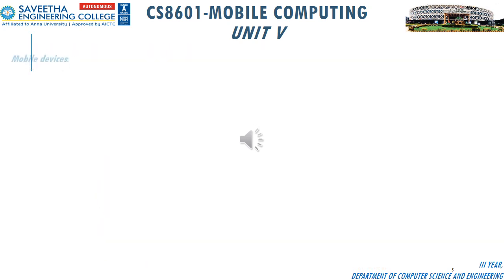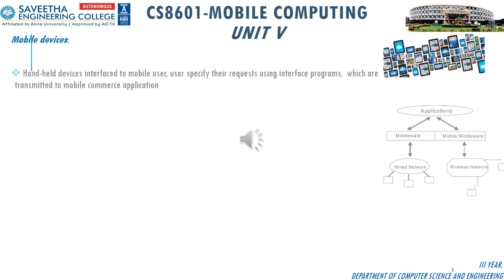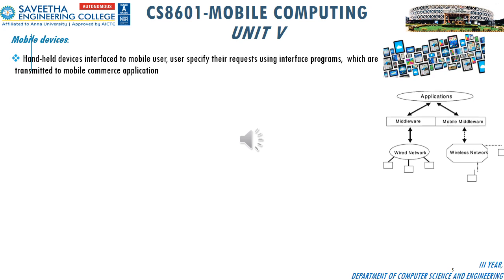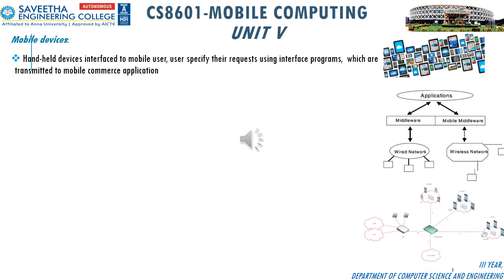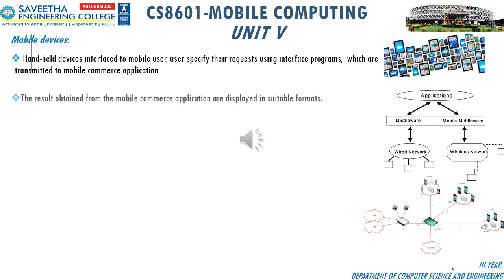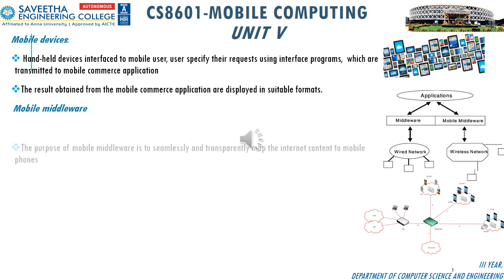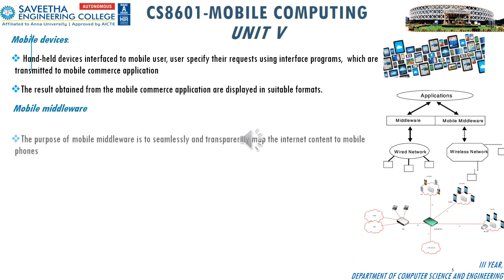There are four modules in the mobile payment process. The first is mobile devices — these are handheld devices that interface with the mobile user. Users specify their requests using interface programs, which are transmitted to the mobile commerce application, and results are displayed in suitable formats.